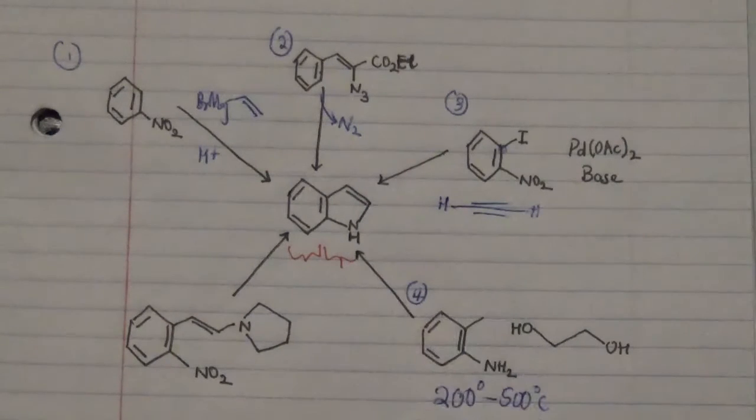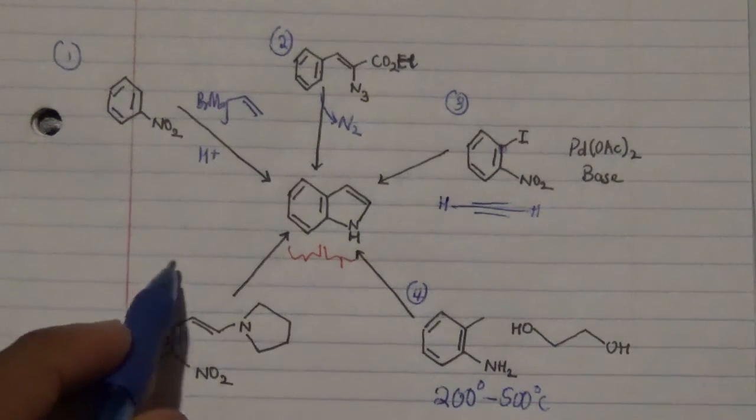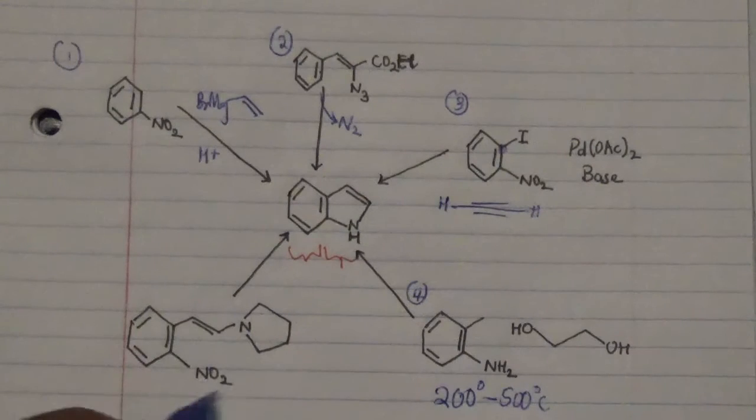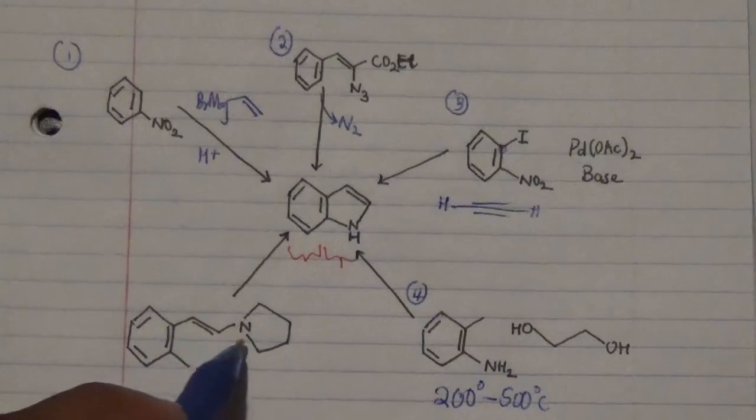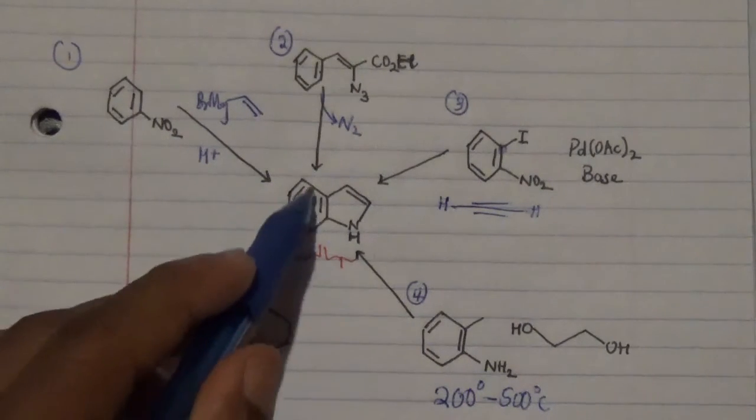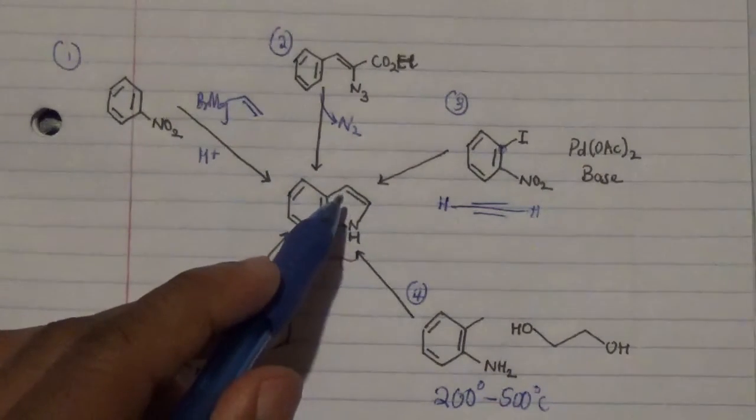Last and foremost, we're going to follow a Raney nickel reaction where we are going to be reducing a nitrostyrene. This is the nitrostyrene over there, and we have to subject this to a reduction process to generate this particular reagent.